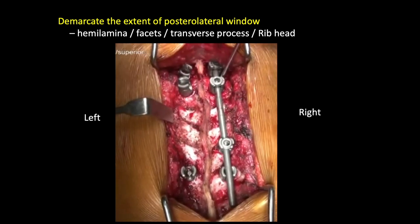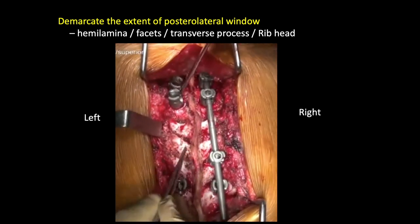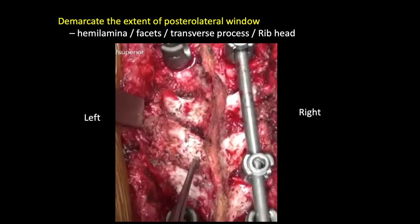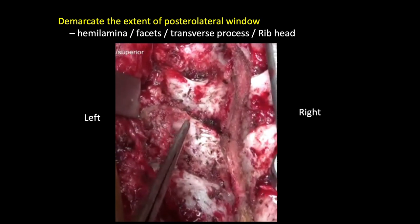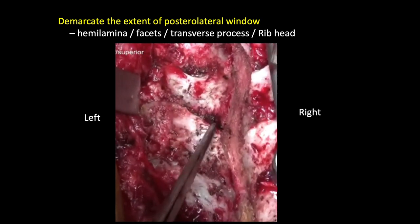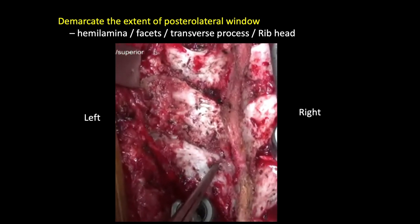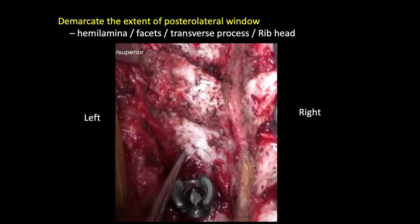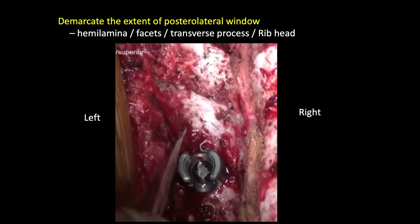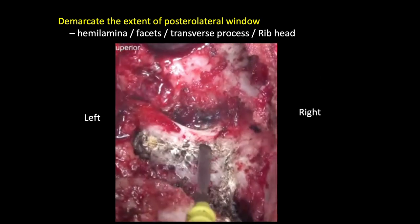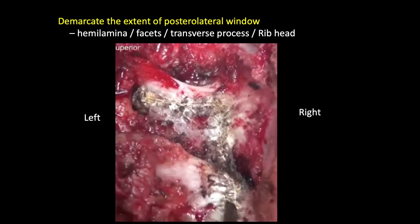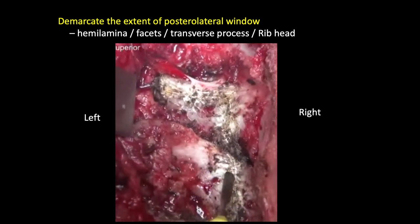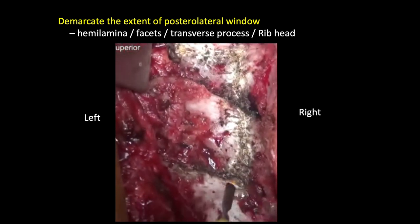It is important to demarcate the extent of the posterolateral window in these cases, and we need to plan all these things on the X-rays and CT scan prior to the case. That's the transverse process and the lamina, the facet joints on one side which I am demarcating. We need to get the lamina, the facets, the transverse process, and if needed, the rib on one side.